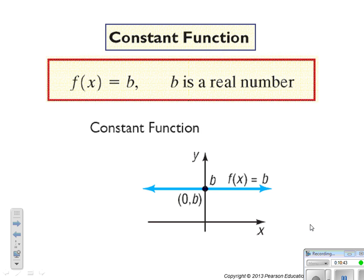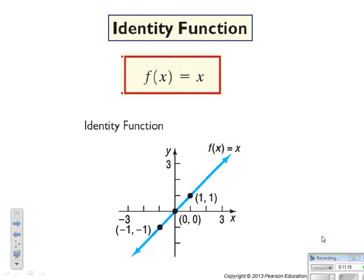The constant function is f of x equals b, where b is a real number. It is a horizontal line and has a y-intercept of (0, b) — it always intercepts at b. The identity function is f of x equals x. It's called the identity because our input equals our output. It's a straight line through the origin with slope 1, and is the parent function to all linear functions.